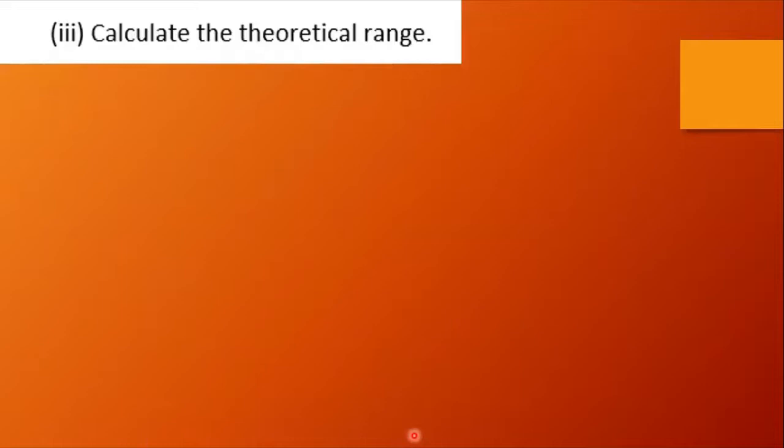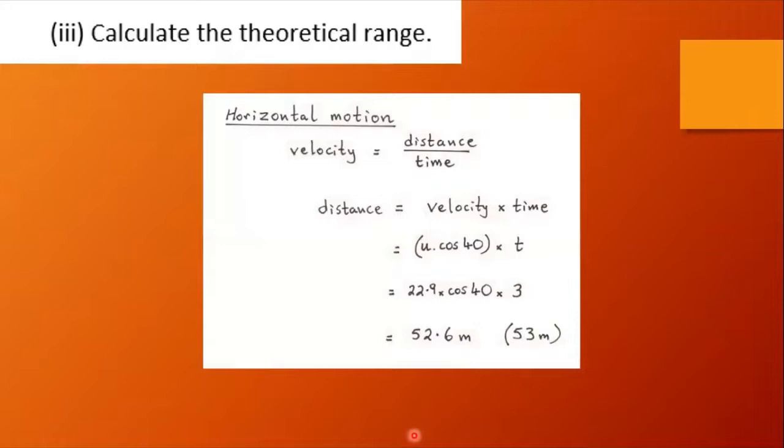We're asked to calculate the theoretical range. Of course, horizontal motion, the velocity is constant and distance equals velocity times time. So we have the horizontal component of the velocity times the total time, and again a quick calculation gives us 53 meters.